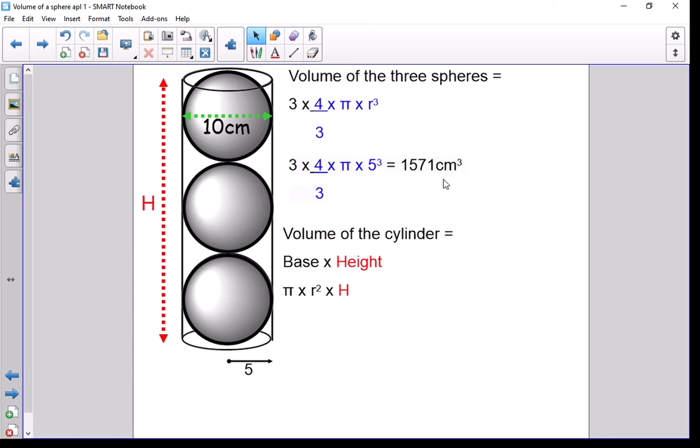It would be the perpendicular height. Sometimes they may not put on that particular length, so you'd need to work it out from the picture. If we know each ball is 10 centimeters in diameter and we're assuming they are tightly fit inside that cylinder,